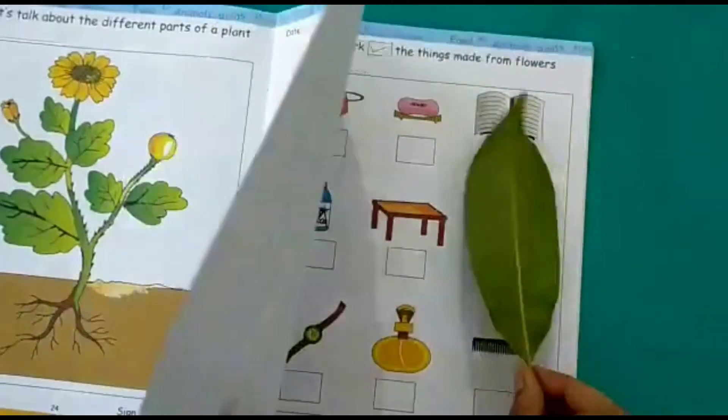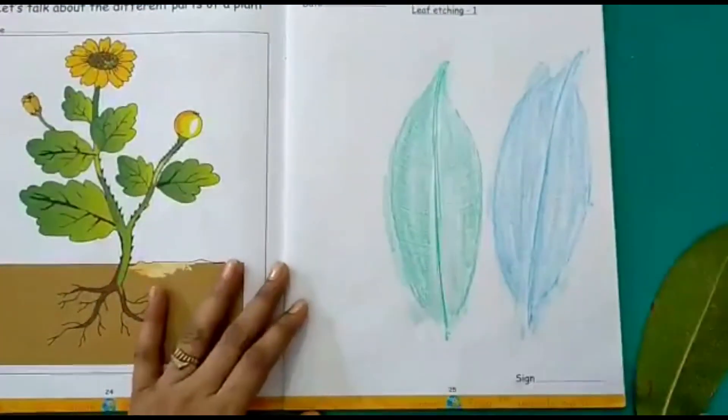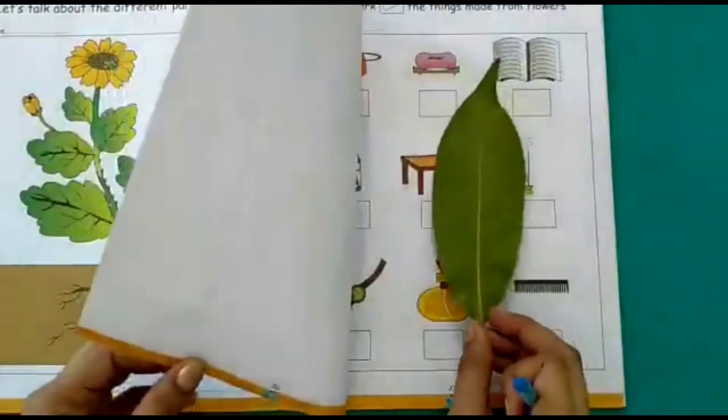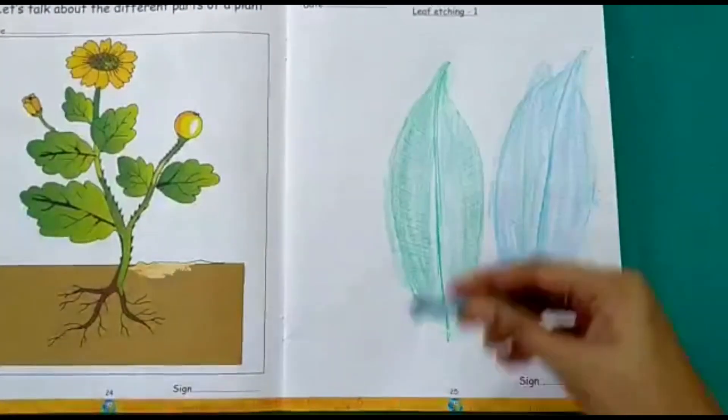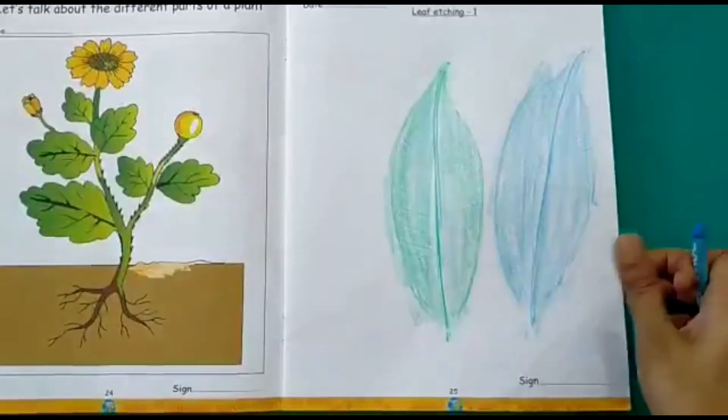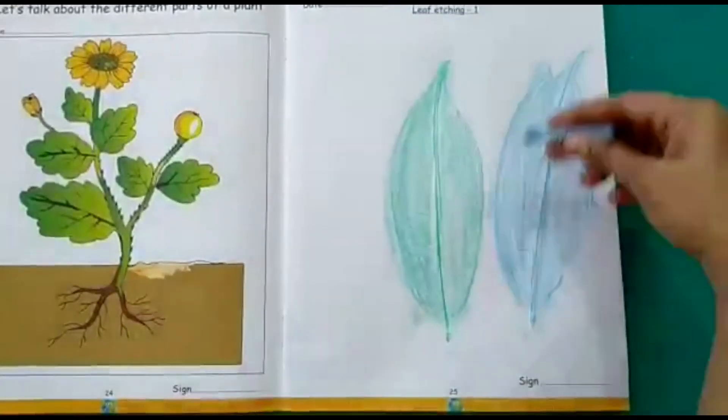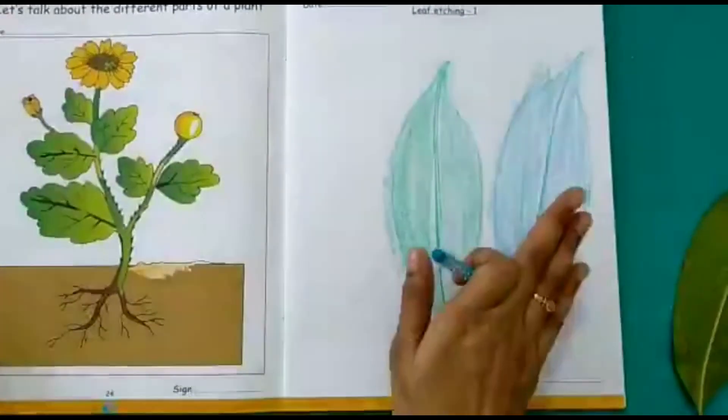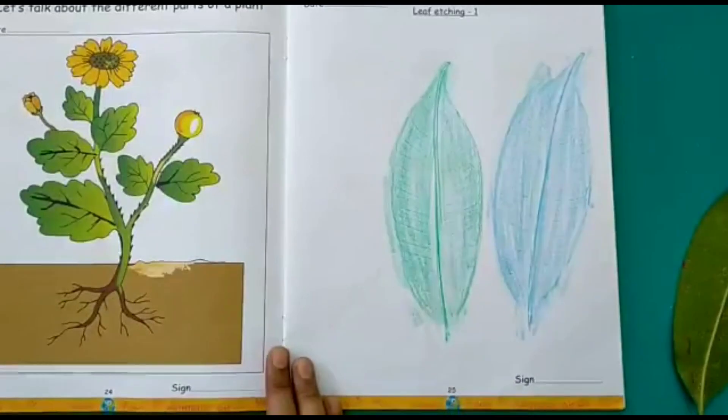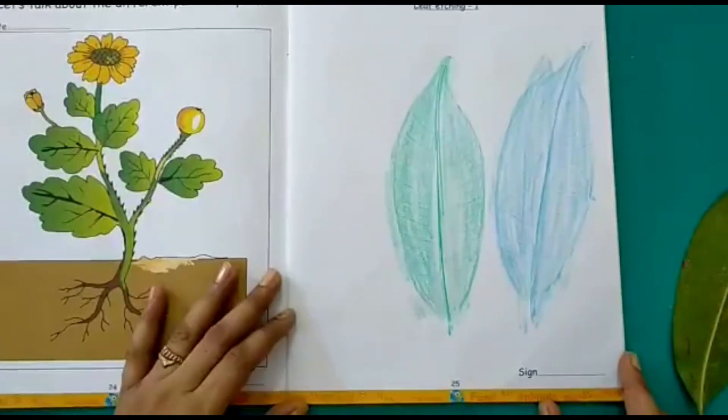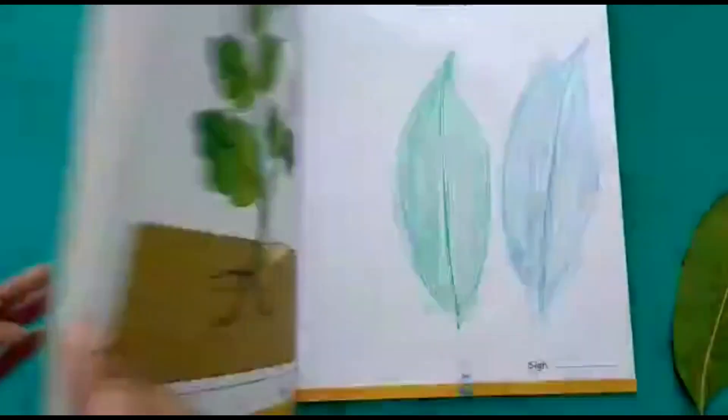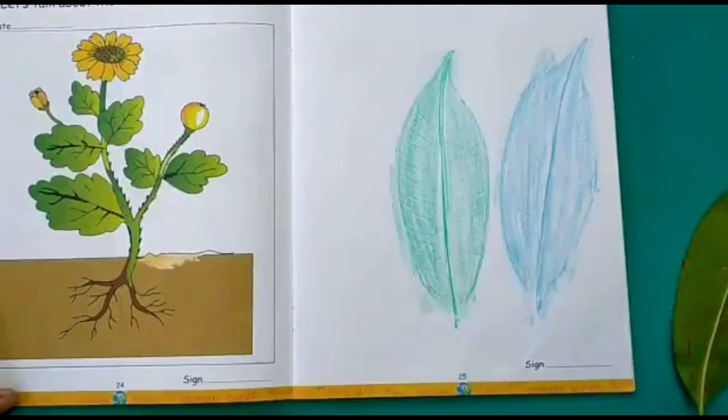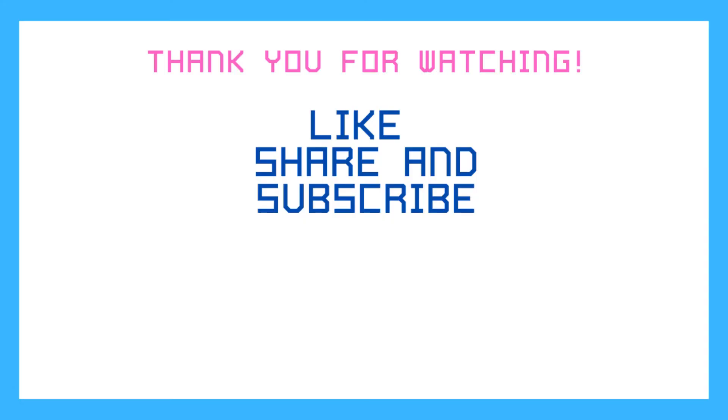This way you have to collect a leaf, place it below the page and then use a crayon and sketch it. You can just rub the crayon over the leaf and you will get the impression of the leaf on this side of the page. So this is your activity of leaf etching on page number 25 of your EVS workbook. That is all for today children. Thank you. Bye for now.